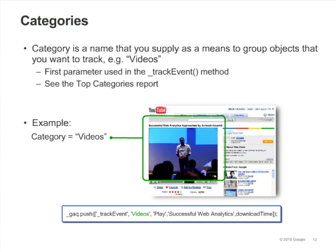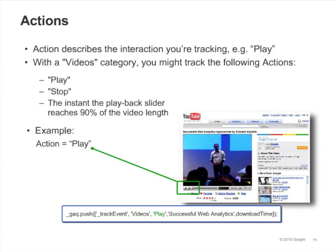The categories report in the event tracking section will show you all the user interface elements with which your visitors interacted. Action is the name you want to give to the type of interaction you're tracking. So for example, for videos, you'd probably want to track how many times your visitors pressed play. The actions report in the event tracking section will show you the interactions that occurred.